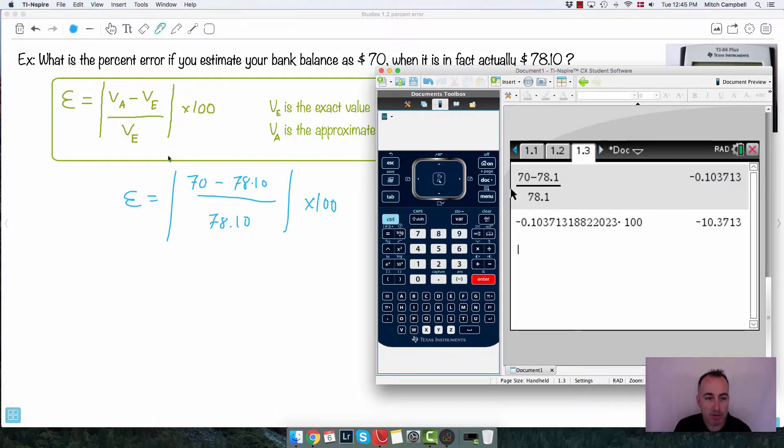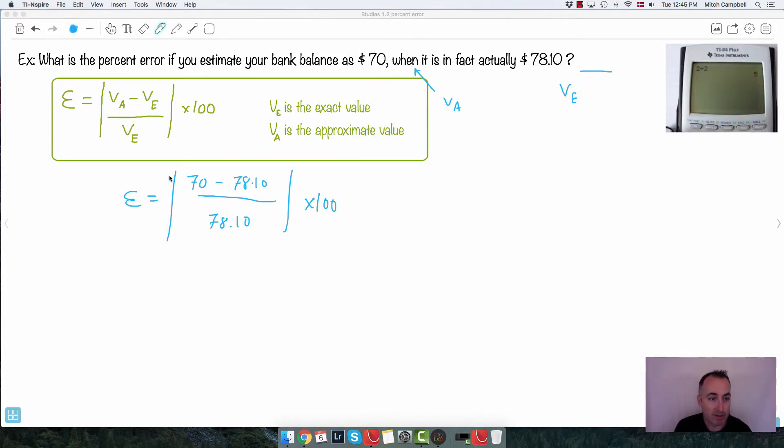And remember, this is supposed to be absolute value. So if you get this right here with absolute values, that means that any negative numbers turn into positive numbers. So in this case right here, instead of saying 10.37 with a negative in front, we're just going to say positive 10.37. Okay, so that's what we're going to say here. So 10.37%.